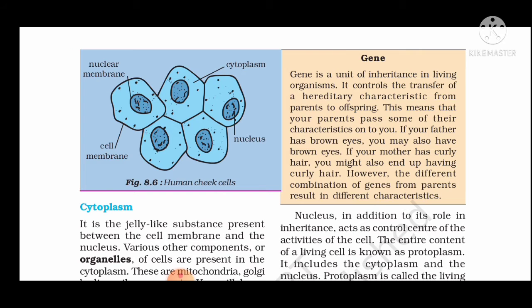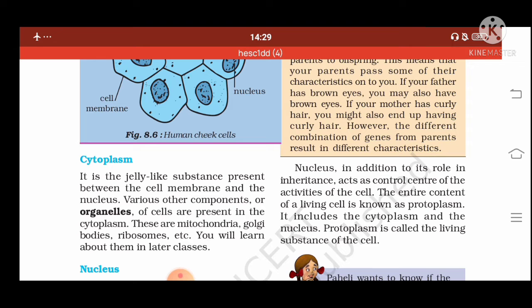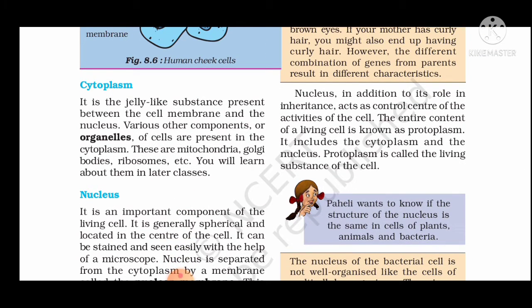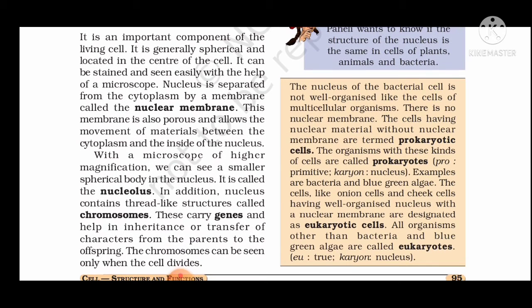In this human cell figure, we can identify the round dense part in the center as the nucleus. The nucleus is separated from the cytoplasm by the nuclear membrane. The outer boundary of the cell is the cell membrane, and the region between the nucleus and cell membrane is the cytoplasm.